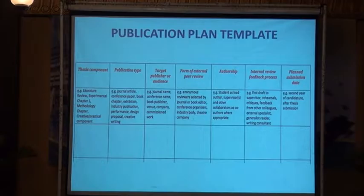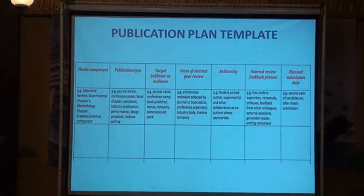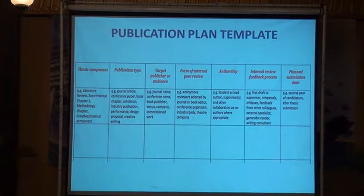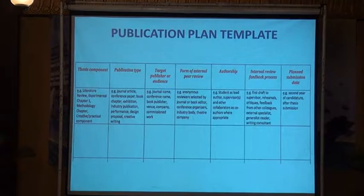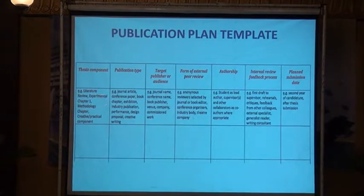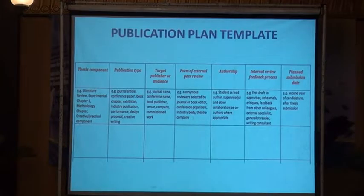Here's a simple example of a publication plan template. Some of the elements are: what thesis components lend themselves to a publication? How could the literature review be used — for instance, as a published systematic review? How might the experimental chapter be used? What sort of article, in what sort of journal? How might the methodology chapter be used? What's the publication type — will it be a journal article or a conference paper? Remember, a conference paper is also a publication; publication simply means it's gone into the public domain.